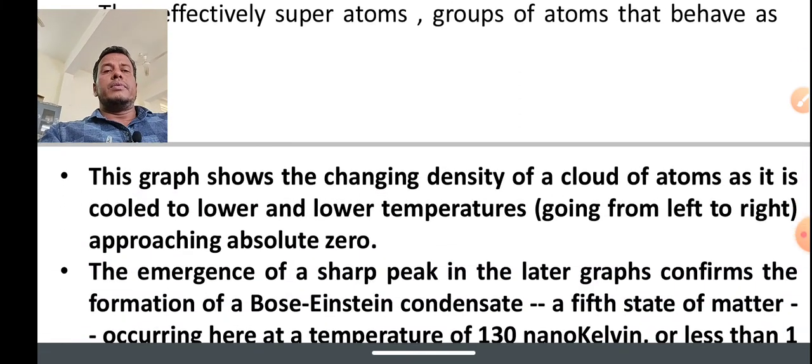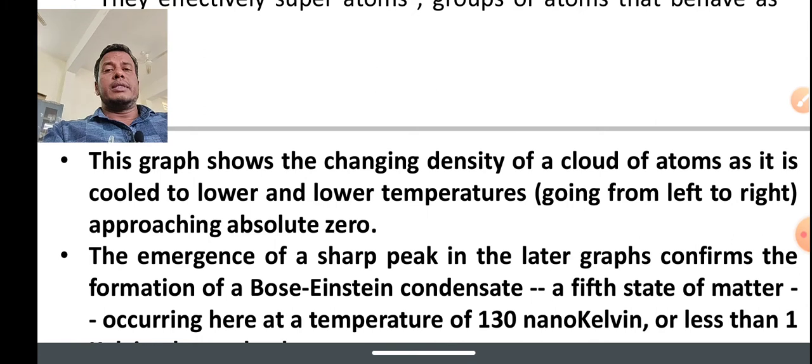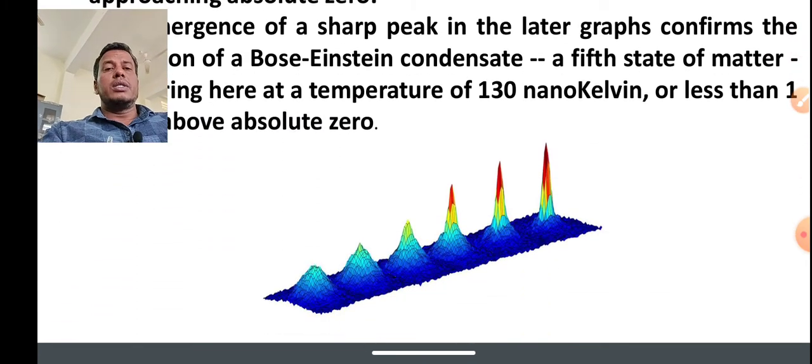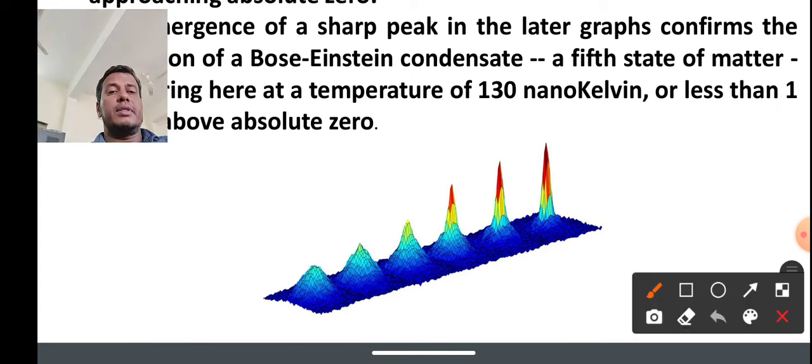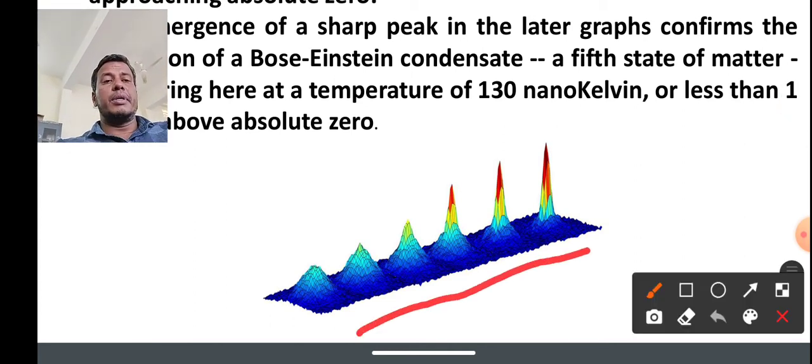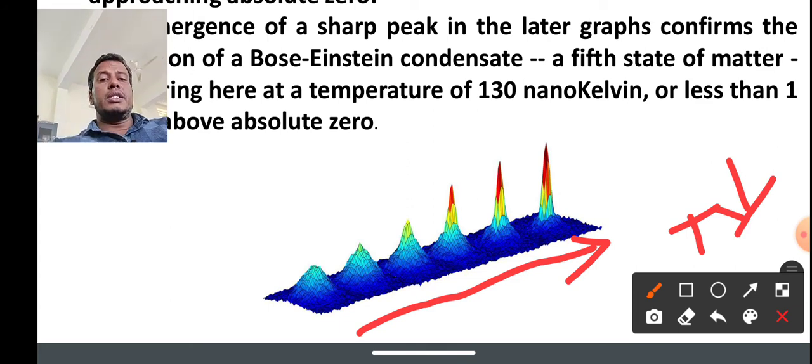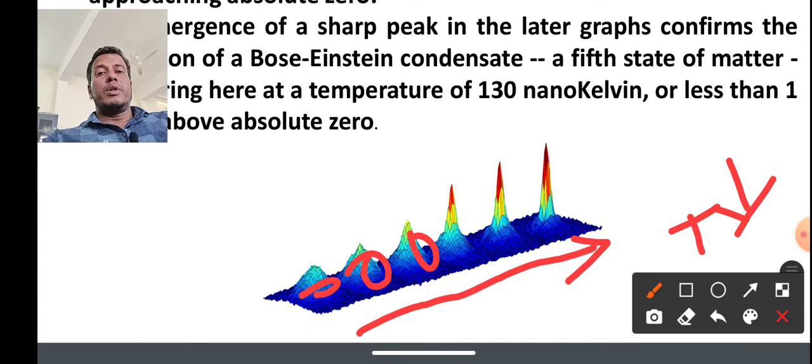As we know, there is a graph here. As the temperature decreases, accumulation of atoms will occur. This shows the decrease in temperature, T decreases. There is the accumulation of atoms will be seen here.